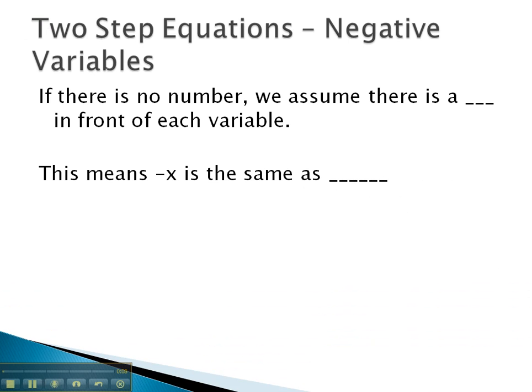Let's think about negative variables for a moment. We know in the past that if there is no number in front of a variable, we always assume there is a 1 in front of a variable. So if we see an x, we assume that means there is 1x. This means when we see negative x with no number there, we can assume there is a 1 in front of that variable. That's the same as negative 1 times x.